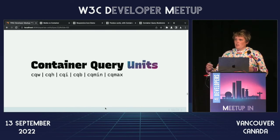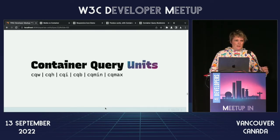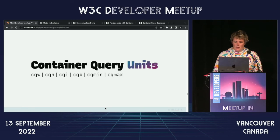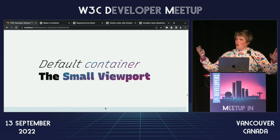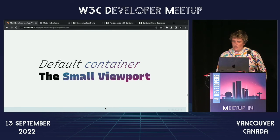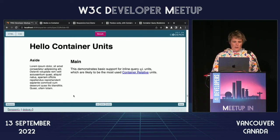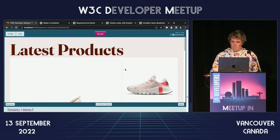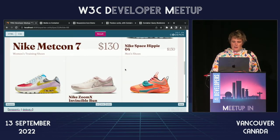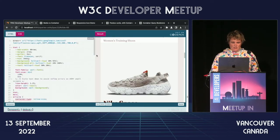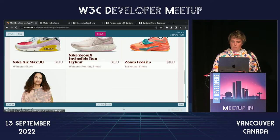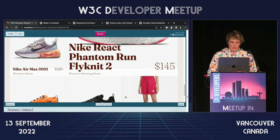We also get container query units, which are the same idea as viewport units but with CQ instead of V: container query width, height, inline or block size, and then min or max. These do get a default container — they'll respond to the small viewport if no container is present so that they always work. Scott Kellum made a demo with ads that change size — it can be used for typography or something like that.